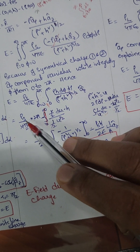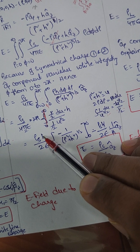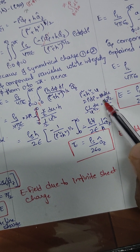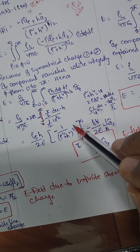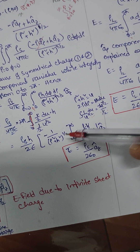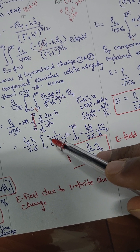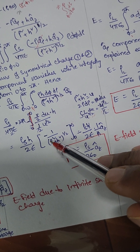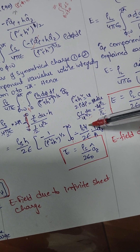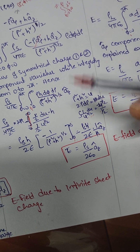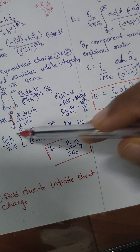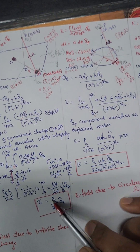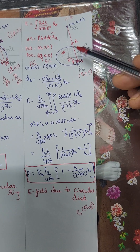Substituting the limits 0 to infinity: placing infinity gives 0, and placing rho = 0 gives 1 over root(h squared) = 1/h. So the result is 0 + 1/h = 1/h. Multiplying everything: rho_S h by 2 epsilon times 1/h gives the final answer rho_S by 2 epsilon, in the a_z direction.